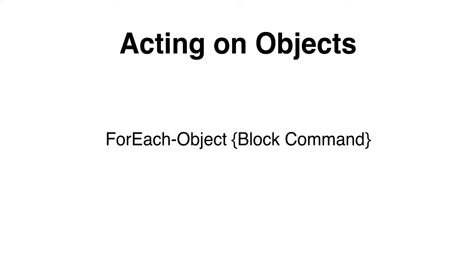We can use the for-each-object loop to act on every single object that has been returned by the pipe. We specify the for-each-object and the command that will execute. Another way is to export to a CSV file — we format the data beforehand and then output it as a CSV file using the commandlet export-csv. There are likely many more ways of acting on objects, but these are the commonly used ones.